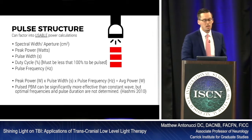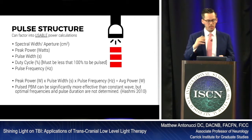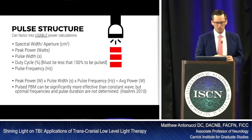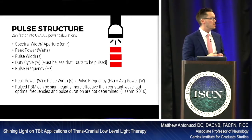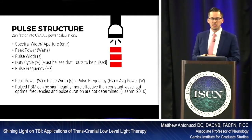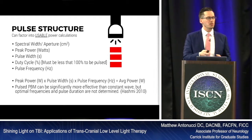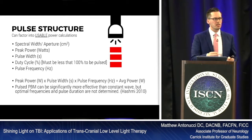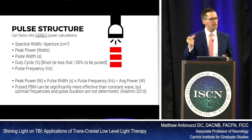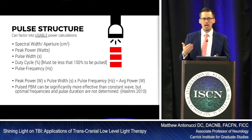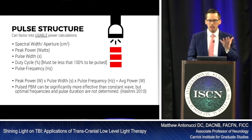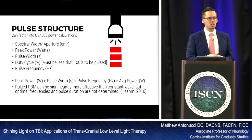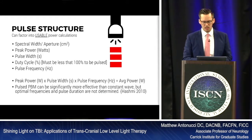We also need to consider peak wattage, pulse width, and pulse frequencies. Importantly, pulsed photobiomodulation has been shown to be significantly more effective than continuous wave — a light that's always on is less effective than a pulsed one. The likely reason is that mitochondria need a rest period; with constant light, there's no time for intracellular balance to occur. Any type of pulsation seems to be more effective in the literature than continuous wave.